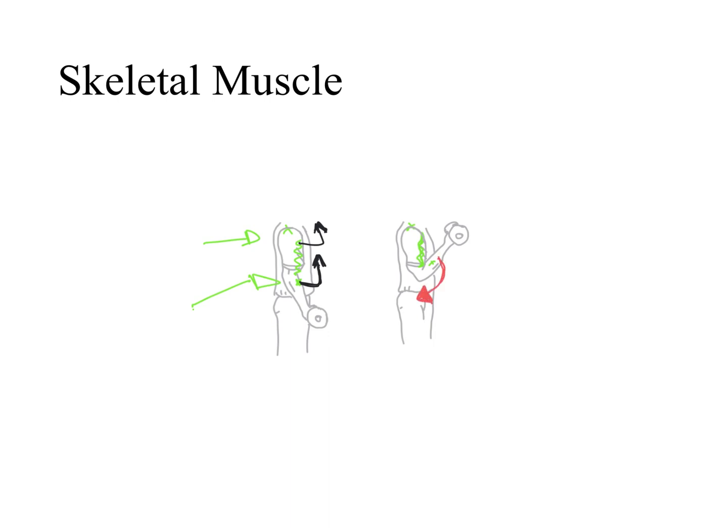For us to be able to extend our forearm, the muscle responsible needs to be on the opposite side of the biceps brachii. If the biceps brachii is in the anterior aspect of the arm, the muscle that causes the opposite movement needs to be in the posterior aspect of the arm. Also, for this muscle to extend the forearm, it needs to attach to a bone in the forearm and cross the elbow joint — the same joint the biceps brachii crosses. When we look at skeletal muscles in our body, we see that they work in pairs.